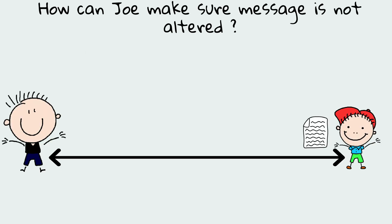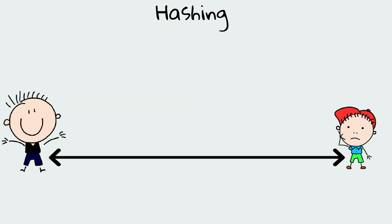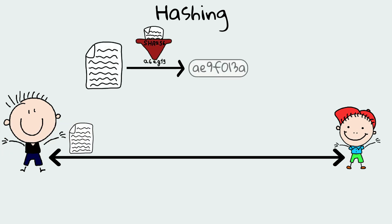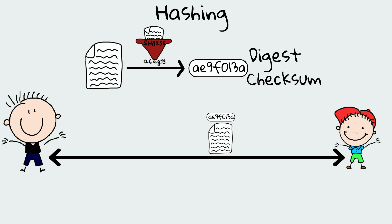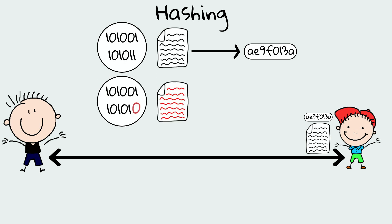Back to our previous example — how can Joe make sure that the message has not been modified? The standard approach would be hashing. JP will apply a hash function to the data he intends to send and will generate a fixed-size hash value, often referred to as the digest or the checksum. He will then send the hash over the internet. If a single bit of the message is changed, it would output a different hash.